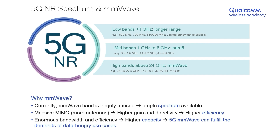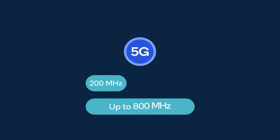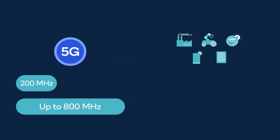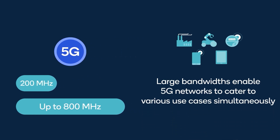Millimeter wave 5G has certain undeniable benefits. The first benefit is that very few technologies previously had the capability or need to utilize such high frequencies, so there are very few services contending for spectrum there. As a result, millimeter wave bands are currently largely unused, and ample spectrum — on the order of 200, 400, or even 800 megahertz — can be provisioned with little difficulty.